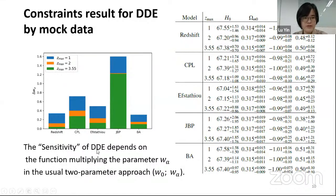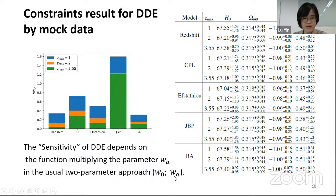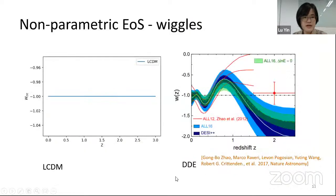The first conclusion is: the sensitivity of dynamic dark energy depends on the function multiplying the parameter W_A in the usual two-parameter approach W_0 and W_A. Second, I will introduce a kind of non-parametric equation of state — that is Wiggles.